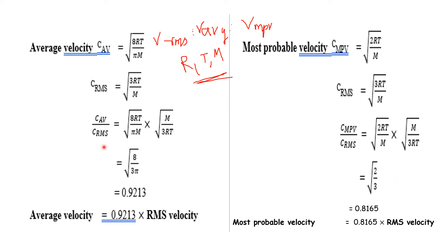Now, average velocity divided by root mean square velocity: we substitute both formulas. The RT and m terms cancel out, leaving the square root of 8 divided by 3π. This value equals 0.9213. So the average velocity is equal to 0.9213 times the root mean square velocity.